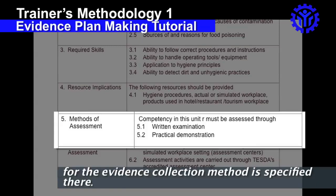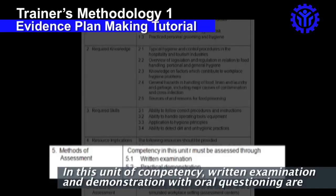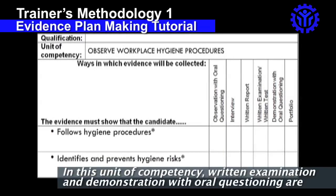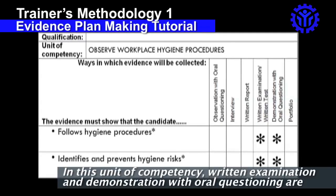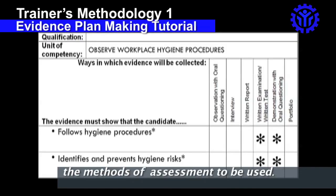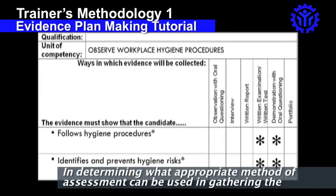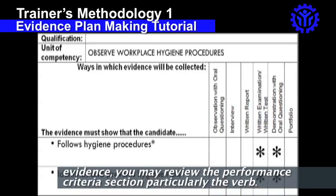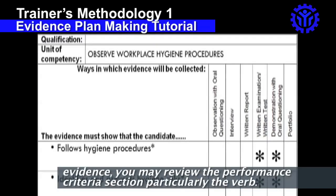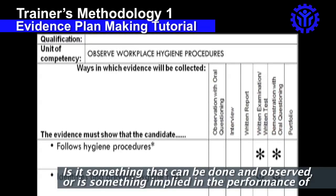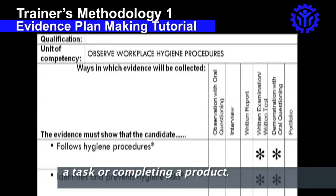In this unit of competency, written examination and demonstration with oral questioning are the methods of assessment to be used. In determining what appropriate method of assessment can be used in gathering the evidence, you may review the performance criteria section — particularly the verb: is it something that can be done and observed, or is it something implied in the performance of a task or completing a product?